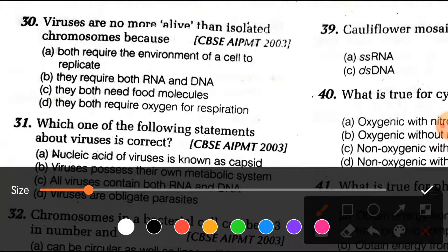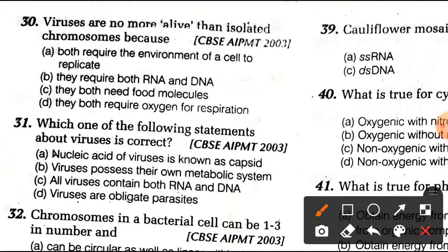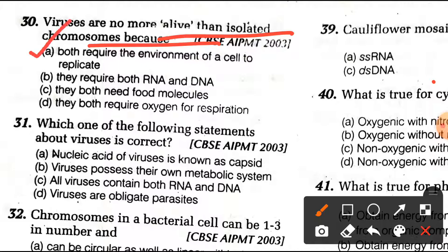Viruses are no more alive than isolated chromosomes because they both require the environment of a cell to replicate. The isolated chromosome is not living. The right answer is option A: both require the environment of a cell to replicate, because they do not have their own metabolic machinery.